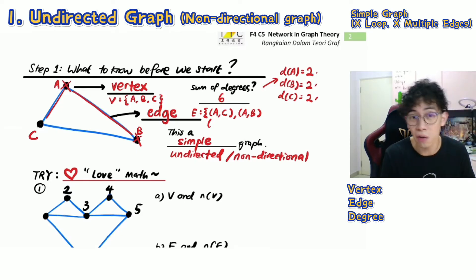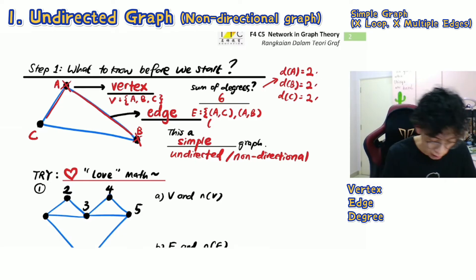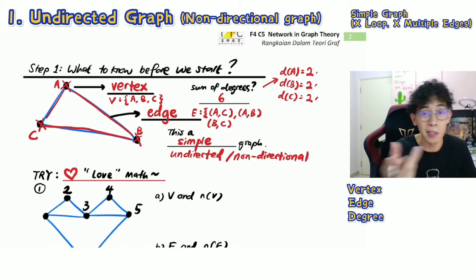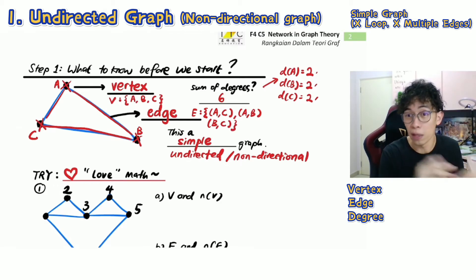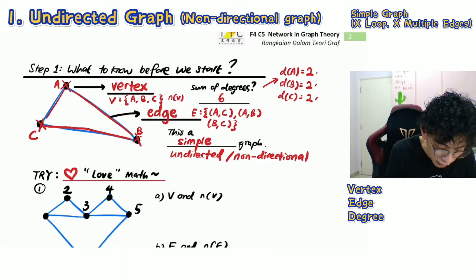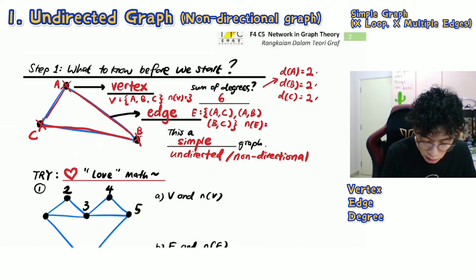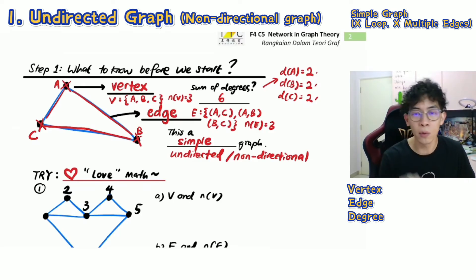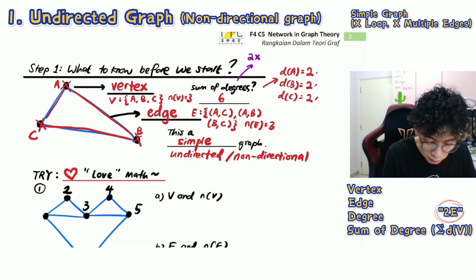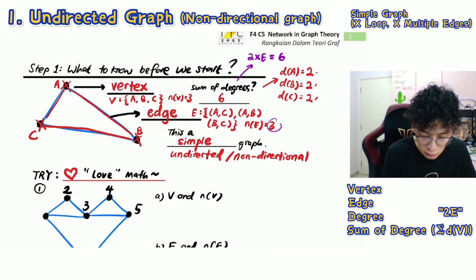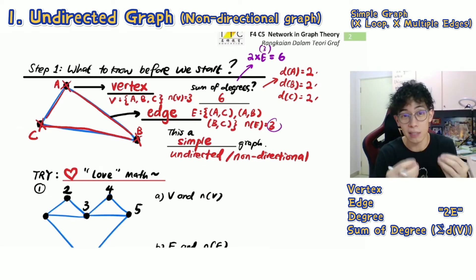Continuing the edge list: B to A is already listed, so next is (B, C). Then check C — it's already highlighted, so we're done. Total: three edges. So number of vertices |V| = 3, number of edges |E| = 3. There is a very important formula: the sum of degrees is always double the number of edges, so 2 × 3 = 6.